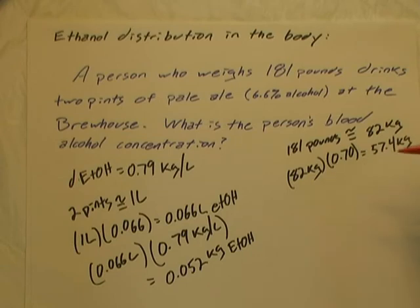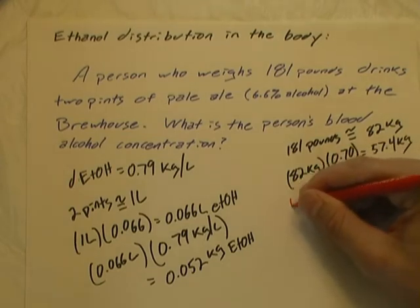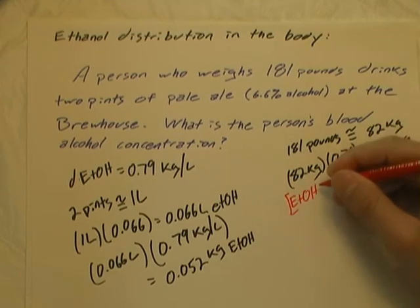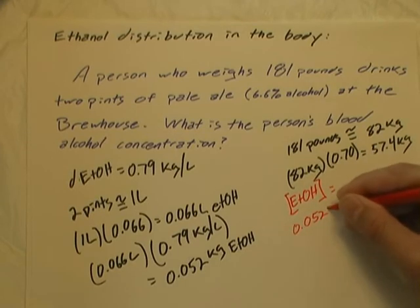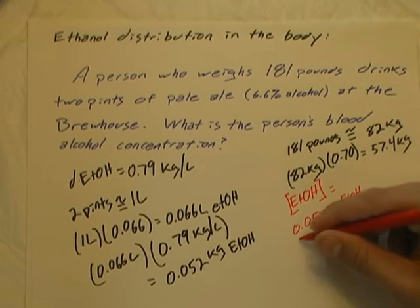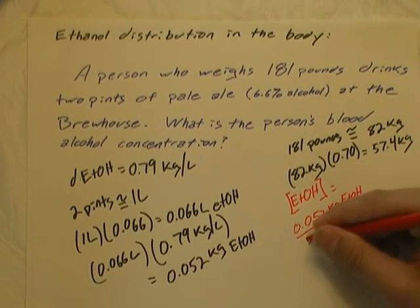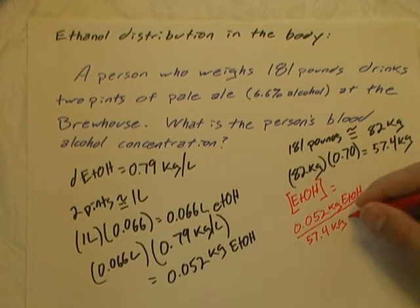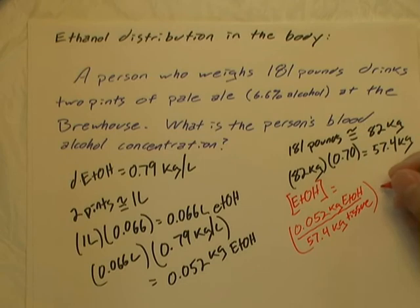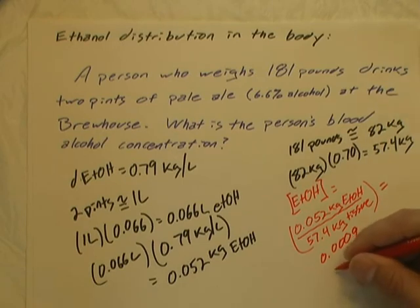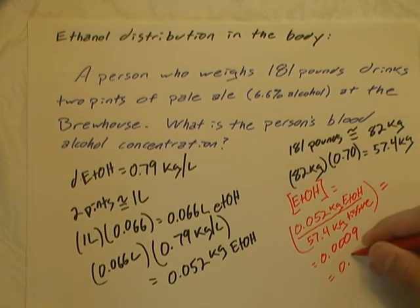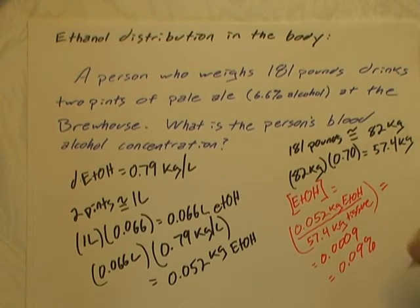The concentration of ethanol in the body is equal to 0.052 kilograms of ethanol in 57.4 kilograms of tissue mass. If we divide that out, we get 0.0009, which is equal to 0.09%.